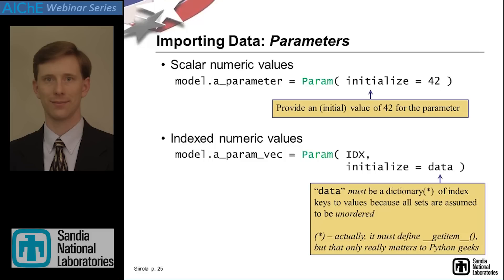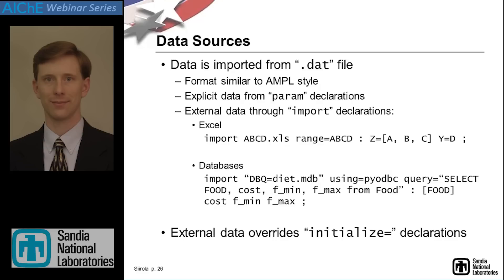Parameters get data, and most of our examples actually read data from a .dat file — our support for .dat files closely mirrors AMPL syntax. It's not exactly the same, but for most standard models they're equivalent syntaxes. You could also bring in data from other external sources like Excel spreadsheets, databases, or comma-separated text files.